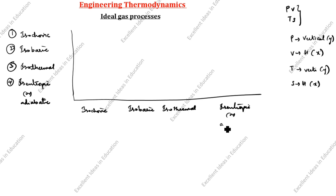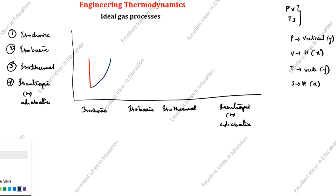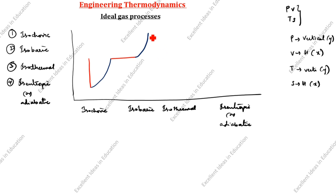Now we will see PV and TS diagrams for each process. For isochoric: the PV diagram comes straight, and the TS diagram goes parabolic. For isobaric: the PV diagram comes straight, and the TS diagram goes parabolic.